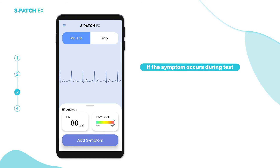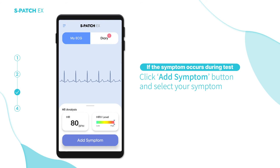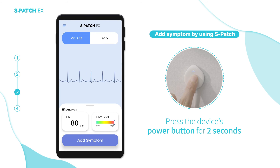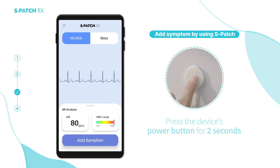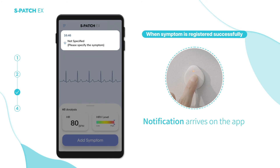If a symptom occurs during the test, click the Add Symptom button and select your symptom. When you are unable to use your mobile, press the device's power button for two seconds. When the symptom is registered successfully, a notification arrives on the app.